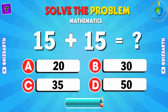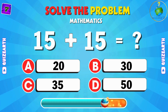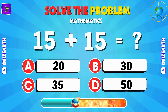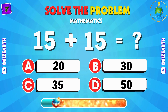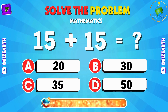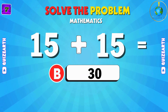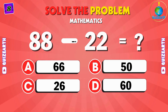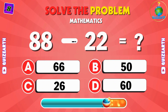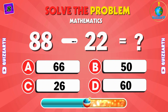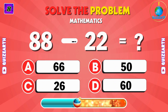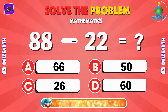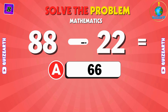Add 15 and 15 — what do you get? B: 30. Subtract 22 from 88 — can you solve it? A: 66.